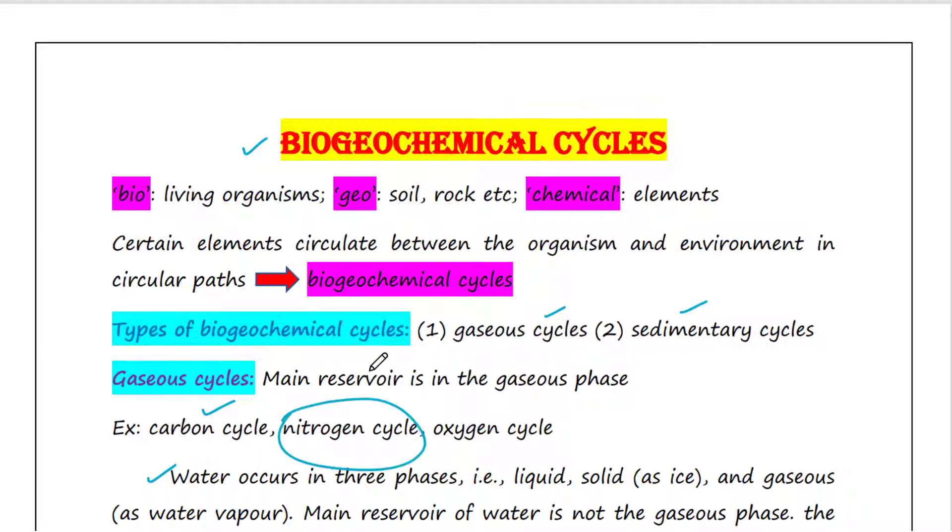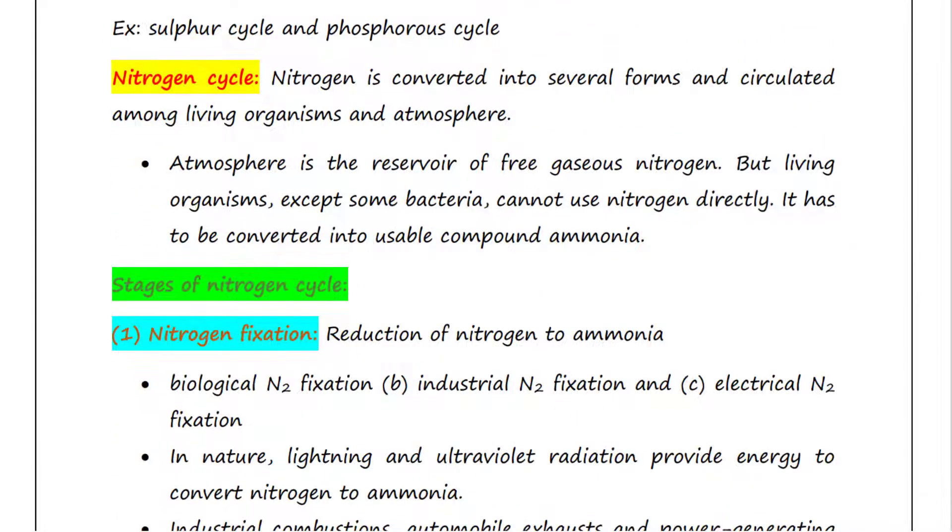Today we will talk about nitrogen cycle. The nitrogen cycle is the process where nitrogen is converted into several forms and circulated among living organisms and atmosphere. Nitrogen is an essential compound of our life. The atmosphere is the reservoir of free gaseous nitrogen, but living organisms, except some bacteria, cannot use nitrogen directly.